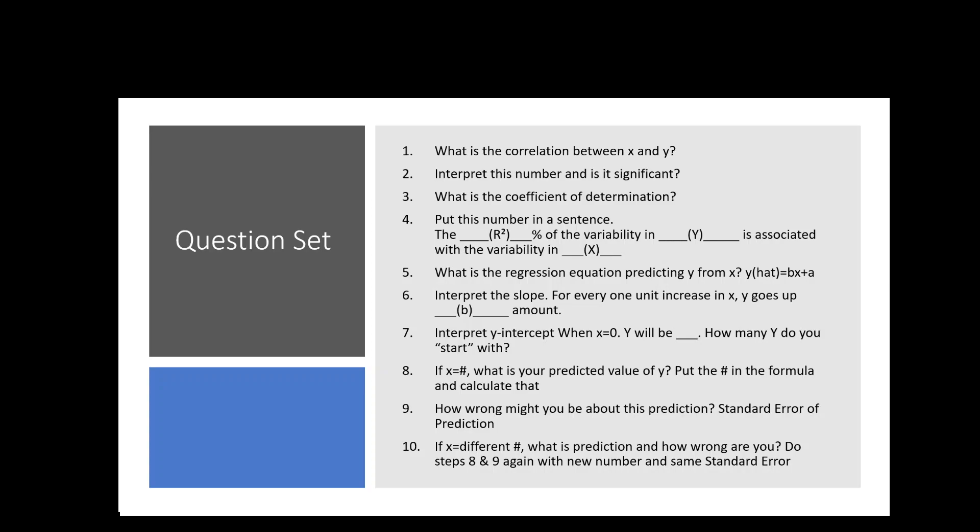Then for question 8, let's say I give you an example, and I say somebody has this particular score of x. What do you predict their y value to be? So you'd have to put that number in the formula that you already calculated. And then I would follow up with saying, now that you've given me that predicted value, how wrong are you in that prediction? And that would be the standard error of prediction. And then lastly, I'll have you do that all over again with a new prediction number so that you can see how it changes if we've given you another x value.